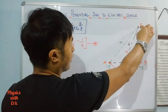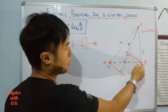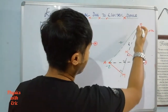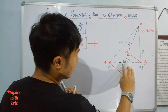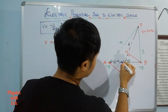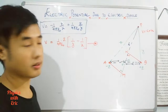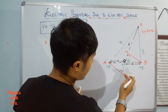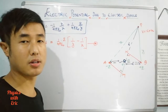Now I draw the line PO and extend it. The angle between the dipole axis and the line OP is theta. From the right triangle AOM, using cos theta equals base by hypotenuse, we get OM equals a cos theta. Similarly from triangle BON, ON equals a cos theta. The two triangles are congruent, so both give the same value.